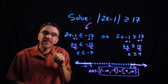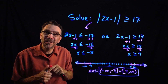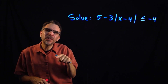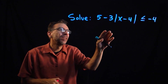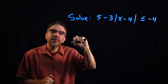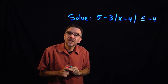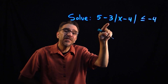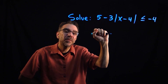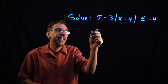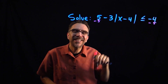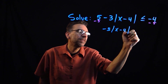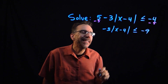Now for one last twist — a test-style question. Notice in the previous two problems the absolute value was already isolated. In this one, we have some operations alongside the absolute value, so the first step is to isolate it. Be careful — you cannot subtract 5 minus 3 and make it a 2; those are not like terms. So we go ahead and subtract 5 first, leaving negative 3 times the absolute value of x minus 4 is less than or equal to negative 9.